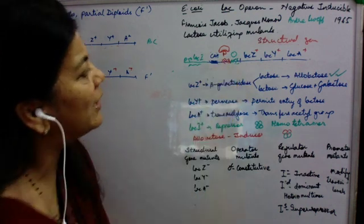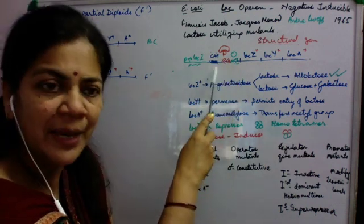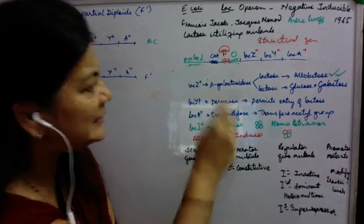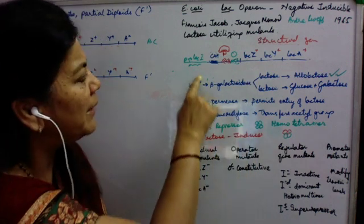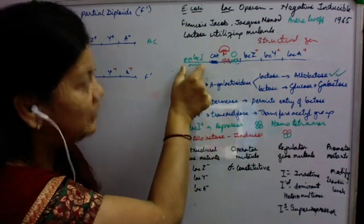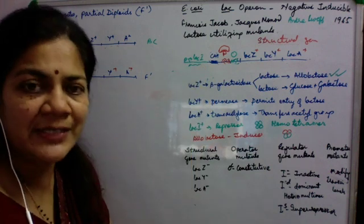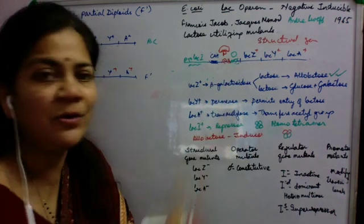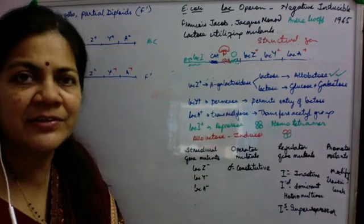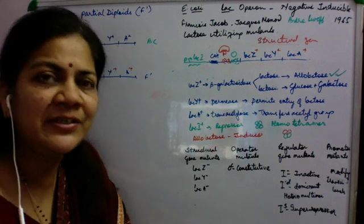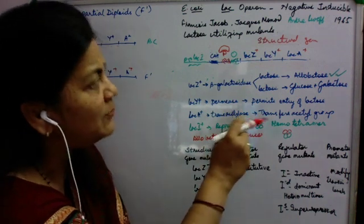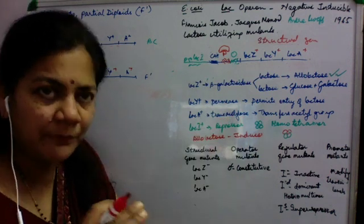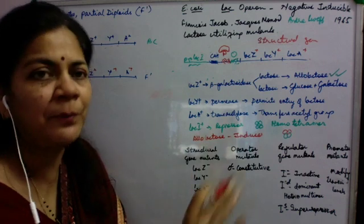The regulatory regions comprise an operator region which lies in between the polymerase promoter region and the structural genes. So you have the operator, you have the promoter, and there is another region called the CAP binding site, which we will talk about later. When Jacob and Monod were studying the lactose operon, they could identify only one operator site, but later research showed there are two additional operator sites — one downstream and one upstream — which are minor operators but needed for full efficiency of the Lac Operon.